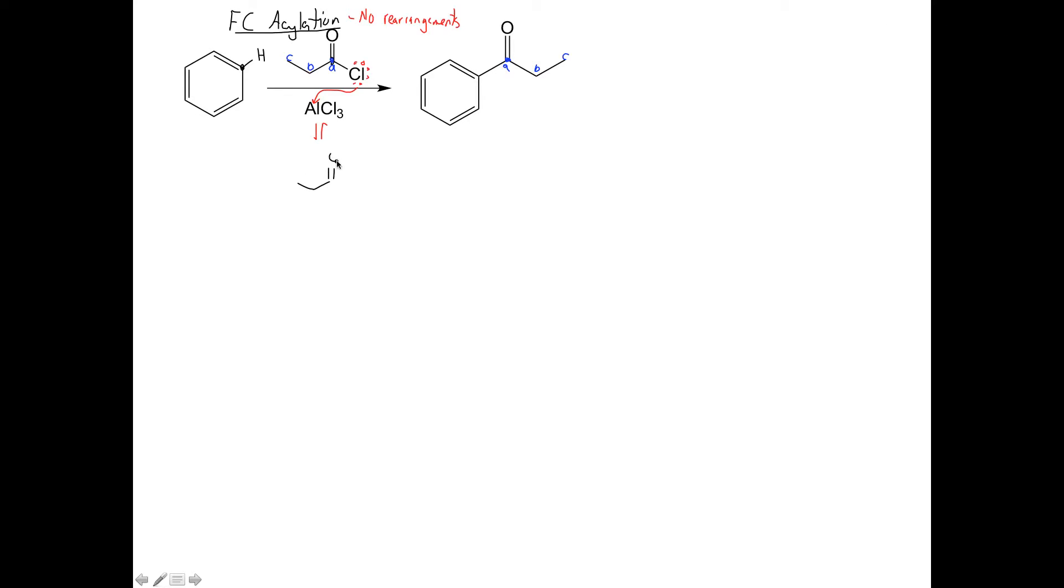And that gets us to this new intermediate here where I have a Cl bond now to Al, and that aluminum is still connected to three other Cls. So the consequence of that is, let's draw in these lone pairs, is this chlorine has a positive charge and now the aluminum has a negative charge.